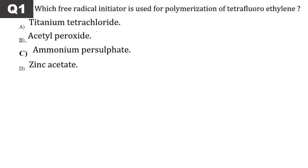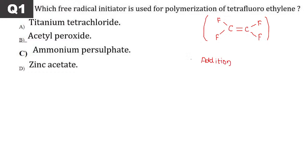Question 3: Which free radical initiator is used for polymerization of tetrafluoroethylene? Draw the structure: CF2=CF2. This question will be repeated here as question number 2 as well — the question of tetrafluoroethylene.